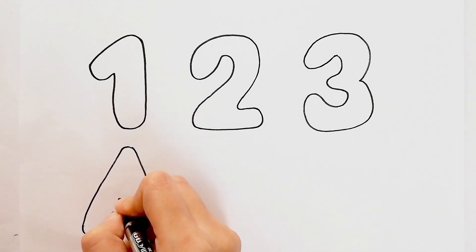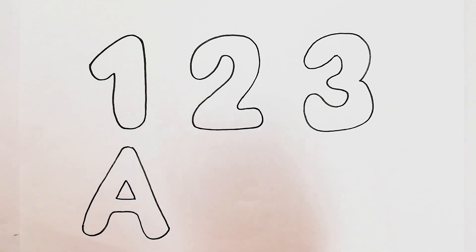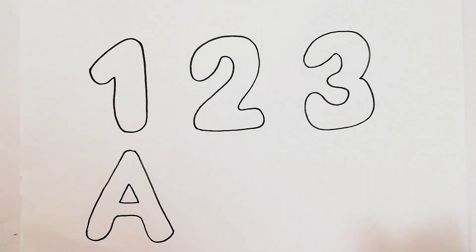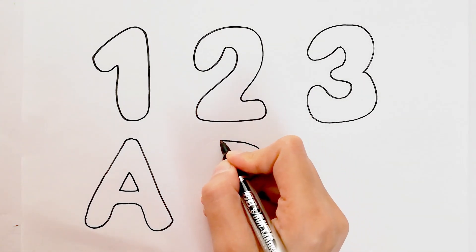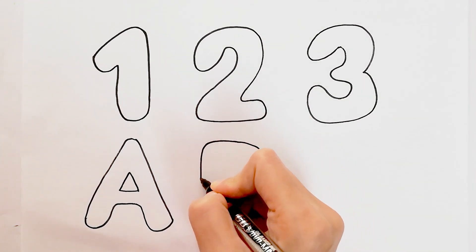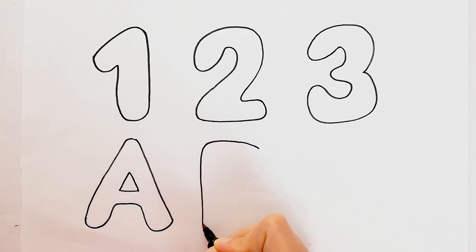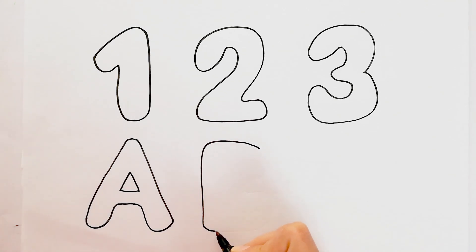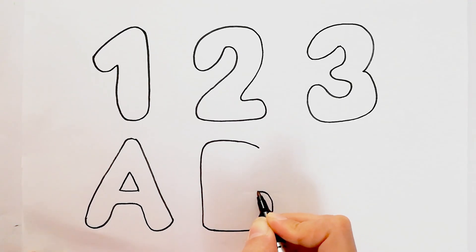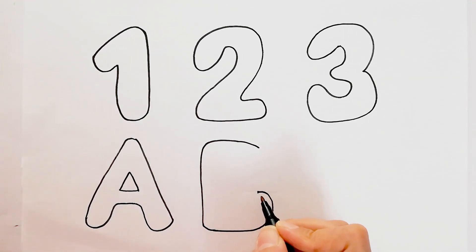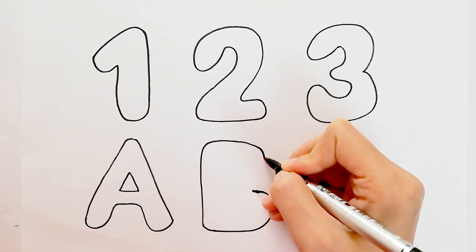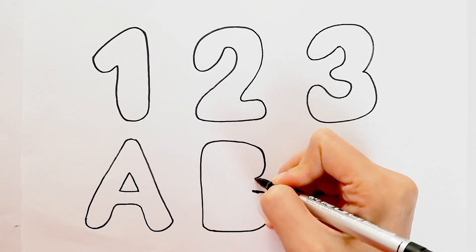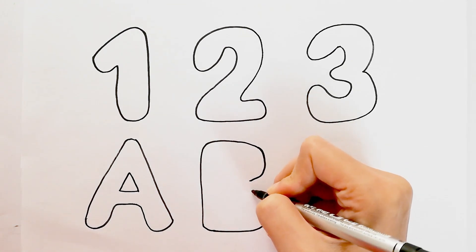A, B, C, D, E, F, G, H, I, J, K, L, M, N, O, P, Q, R, S, T, U, V, W, X, Y, and Z. Now I know my ABCs, next time won't you sing with me?